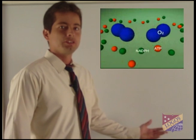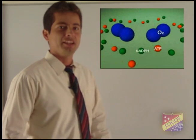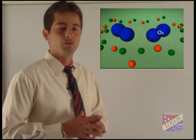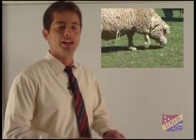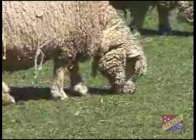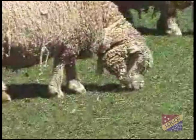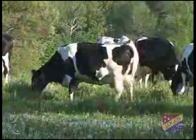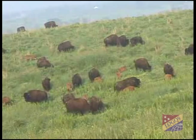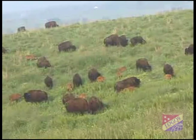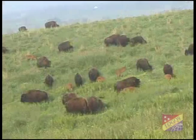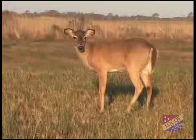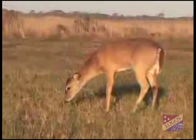When we continue to trace where that energy from the plants goes, we find the primary consumers, or herbivores. They differ from the plants in the way that herbivores cannot make their own food. Therefore, they have to consume the glucose by eating plants, absorbing it and transforming it into ATP to perform their basic functions.